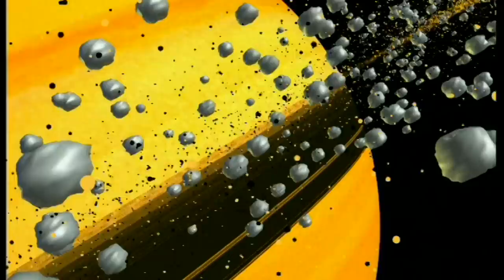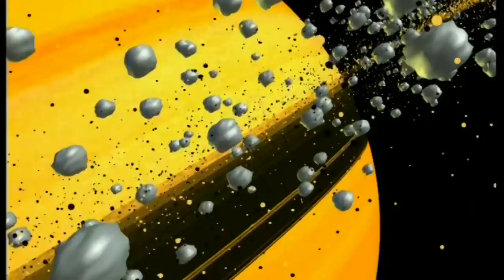De loin, les anneaux de Saturne ressemblent à un voile de tulle. Vu de près, il y a des milliards de petits satellites allant du simple grain de poussière à des rochers glacés de la taille d'un camion.